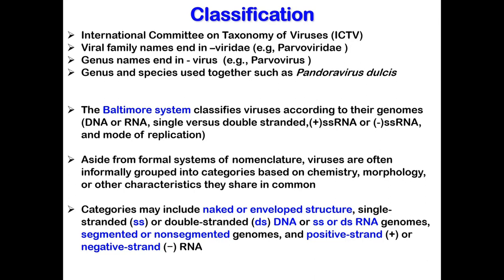Other SS RNA viruses have genomes that are complementary to the mRNA they produce. These viruses are said to have minus strand or negative strand RNA. Aside from formal systems of nomenclature, viruses can also be informally grouped into categories based on chemistry or morphology, such as size, structure, shape, or other characteristics they share in common.